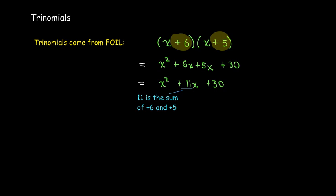The coefficient for the linear term — the 11 — is the sum of positive 6 and positive 5, while the positive 30 is the product of positive 6 and positive 5.